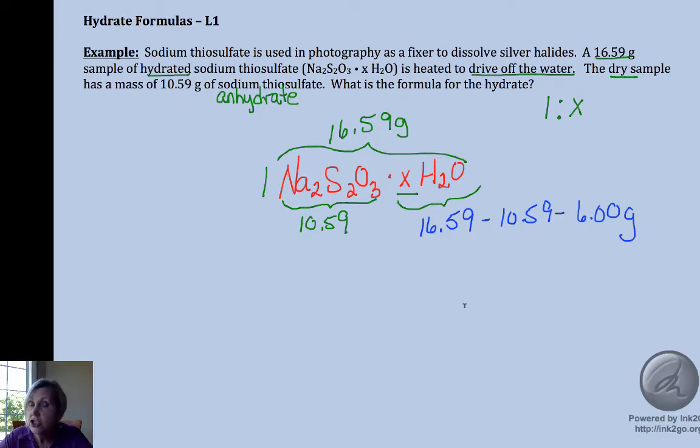So we didn't have percentages to deal with. If we did, you would do it the same way as an empirical formula. Percent to mass, you just assume a total of 100 grams. Right now we've got to go mass to moles, but instead of an element now I have a salt.